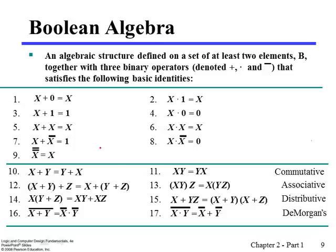But from 1 to 8, you don't have to memorize the name, but you need to understand and remember the equation itself. The commutative law is that you have two variables X and Y, and then you can change the order. That is the commutative law.